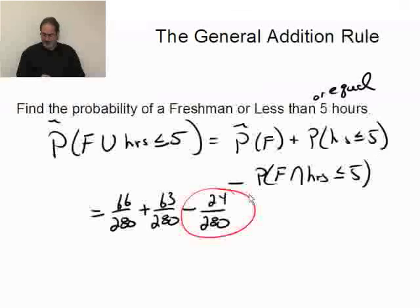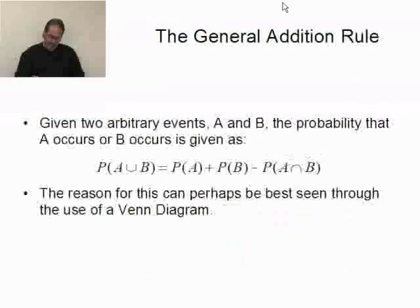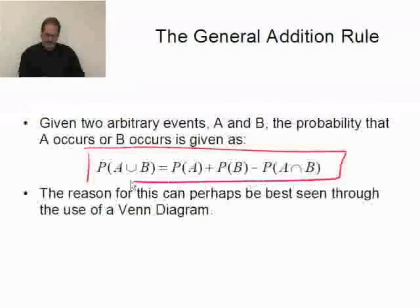So really, that's all there is to the general addition rule. Let's review very quickly the actual equation. The probability of A or B equals the probability of A, the first event, plus the probability of B, the second event, minus the probability of A and B. If we're talking about empirical data, we simply put little hats on these, and we're okay. That's it.